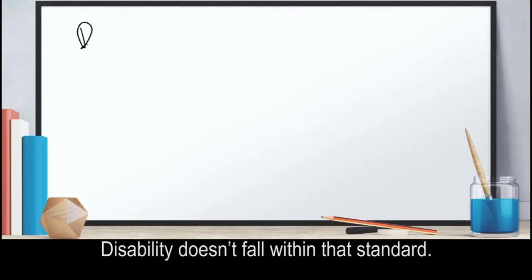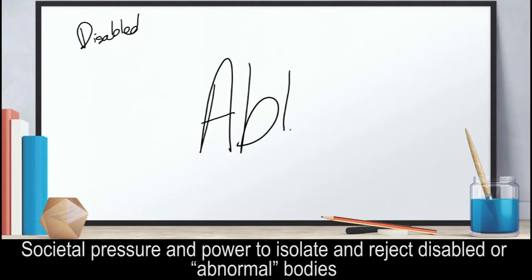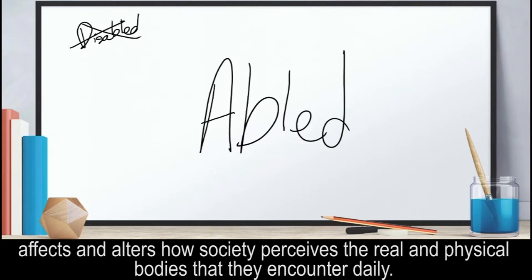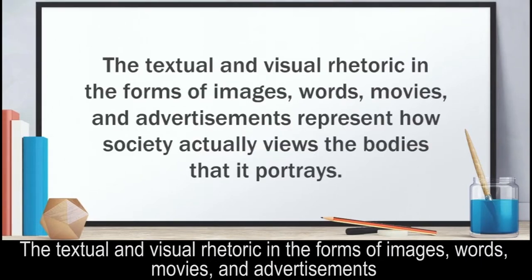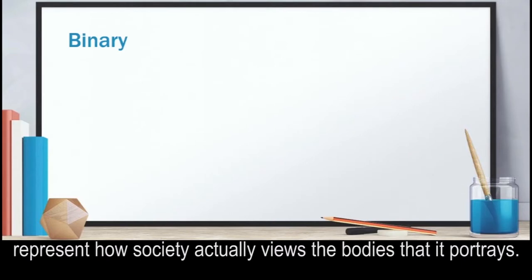Disability doesn't fall within that standard. Societal pressure and power to isolate and reject disabled or abnormal bodies affects and alters how society perceives the real and physical bodies that they encounter daily. The textual and visual rhetoric in the forms of images, words, movies, and advertisements represent how society actually views the bodies that it portrays.